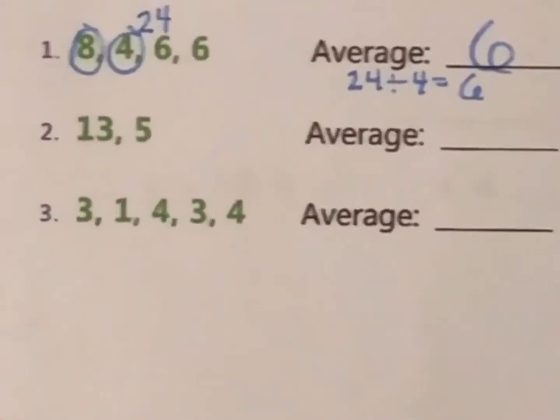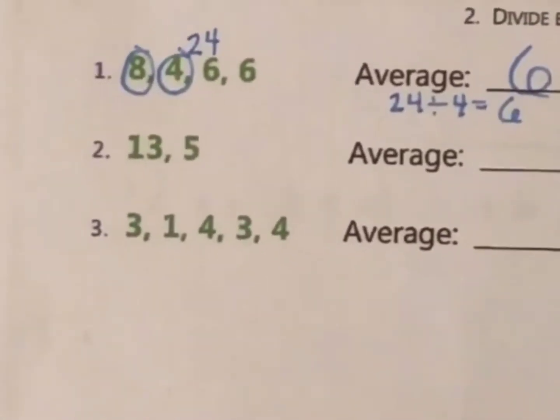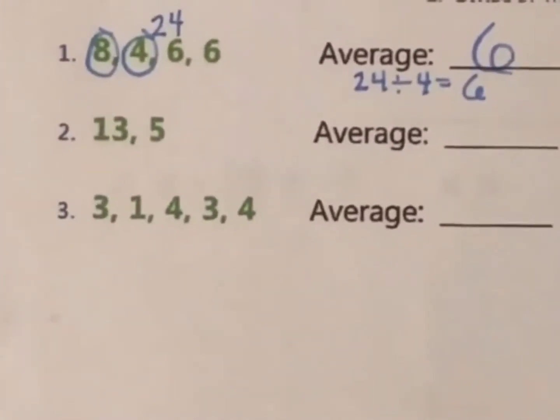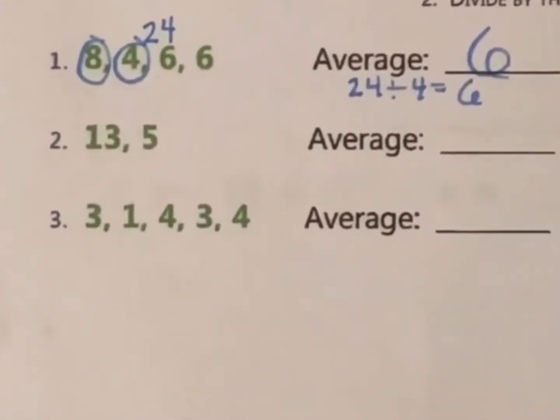And number 2, the range will be rather easy because you've got just two numbers, the biggest and smallest. And number 3, the biggest number is 4 and the smallest is 1. So, what's the difference between those two?